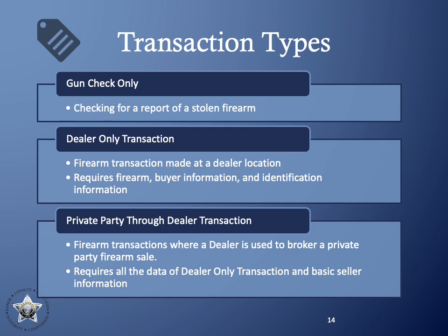The first transaction type is a stolen firearm check — referred to in the API as a gun check — which can include up to 500 firearms in a collection. The second is a dealer-only transaction representing a firearm transaction at a dealer's store; it performs a stolen firearm check and buyer background check, requiring data about the buyer, firearms being purchased, and identification information. The third is a private party through dealer transaction, which also performs a stolen firearm check and buyer background check, requiring the same information plus additional seller information. Each of these three transactions returns a unique transaction ID, which can be used to add a thumbprint image and check on the status of the transaction.